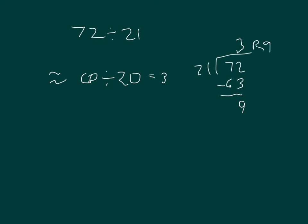Let's check our answer. Take three groups of 21. And then add in the 9. There, our answer checks. 72 divided by 21 is 3, remainder 9.